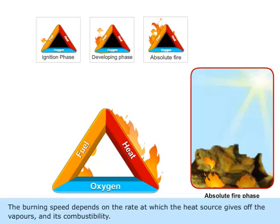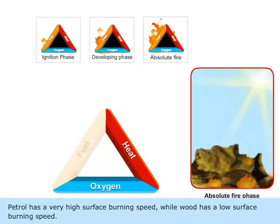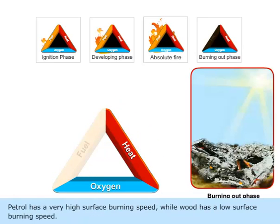The burning speed depends on the rate at which the heat source gives off the vapors and its combustibility. Petrol has a very high surface burning speed while wood has a low surface burning speed.